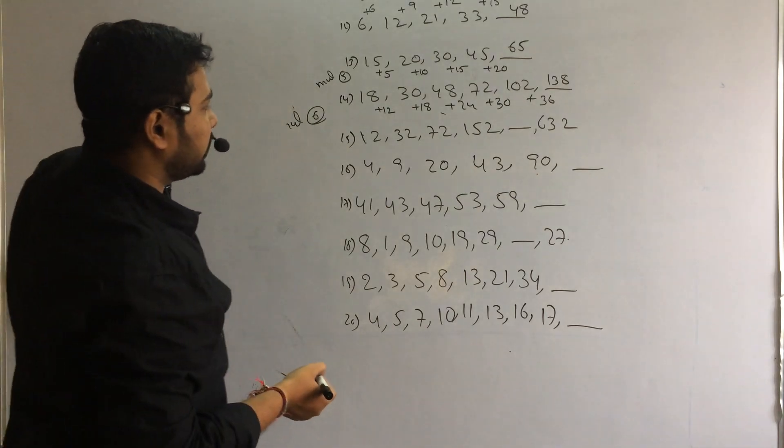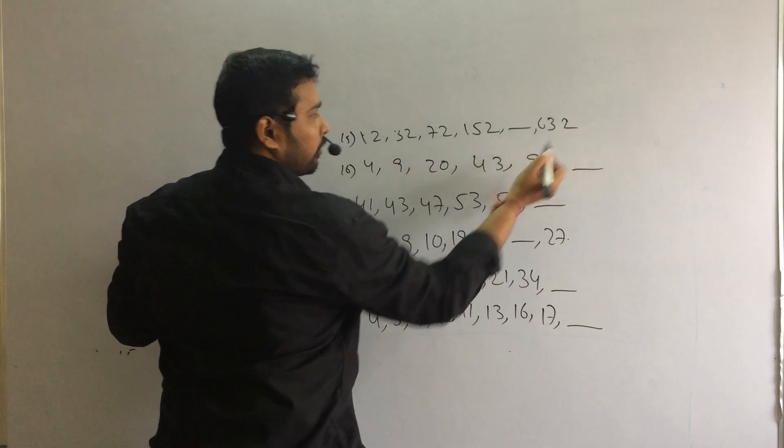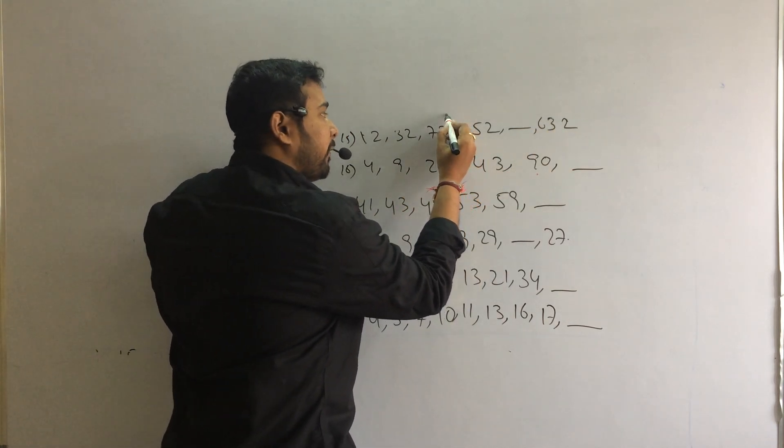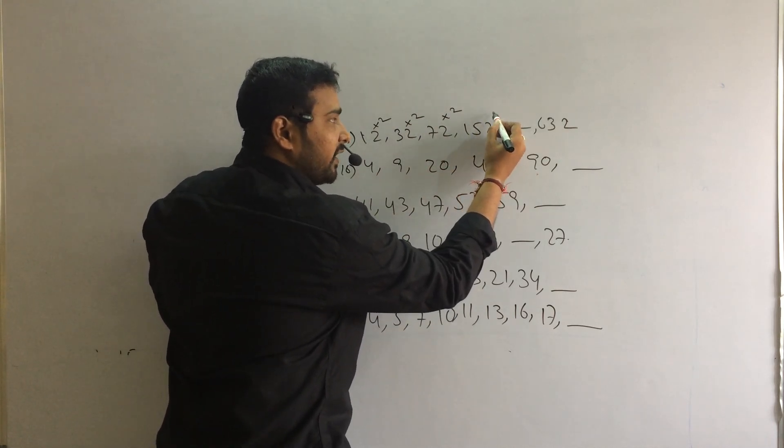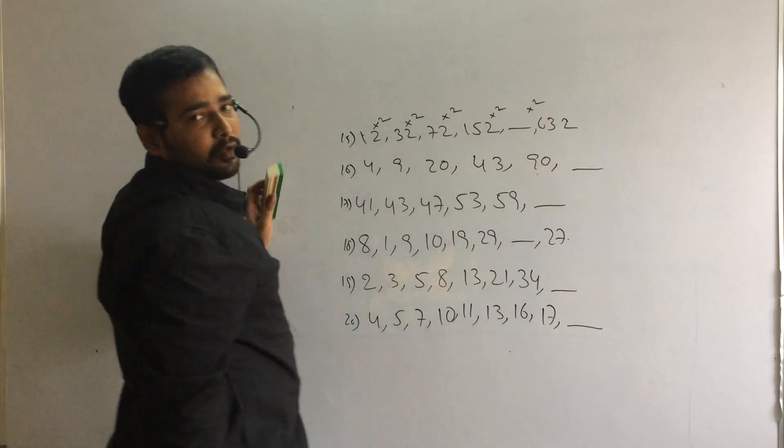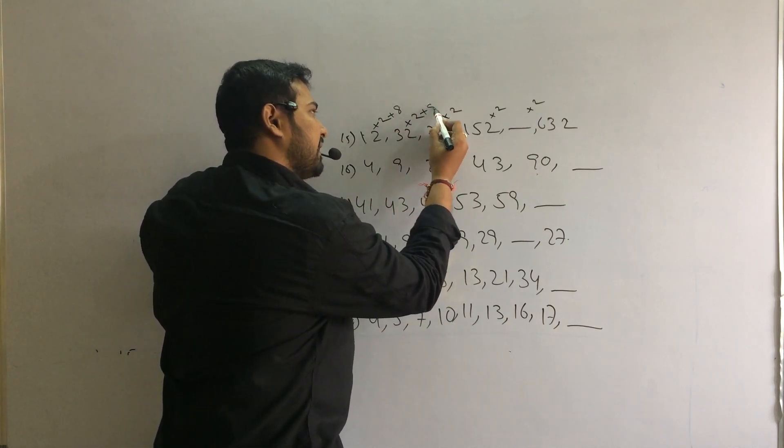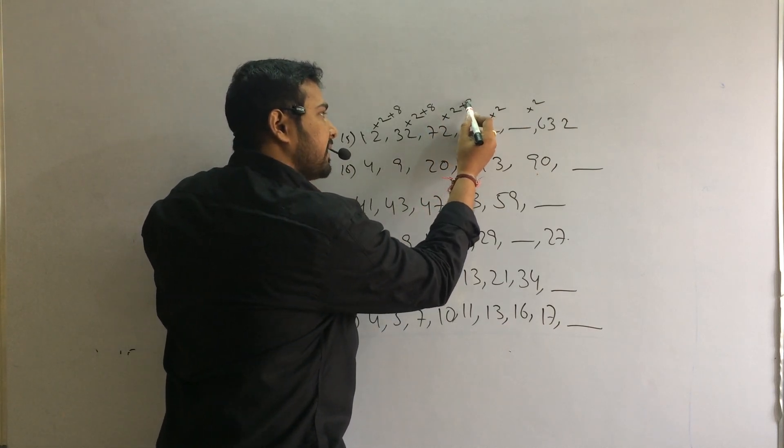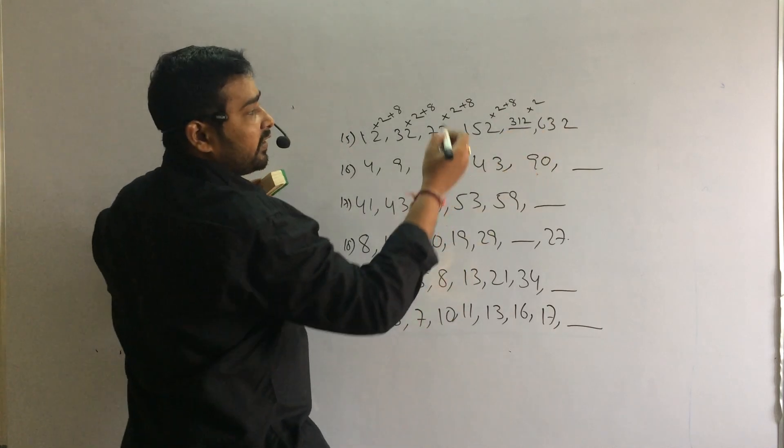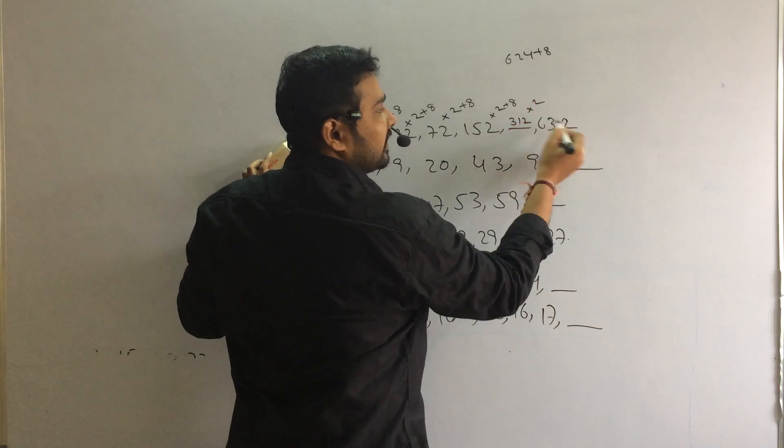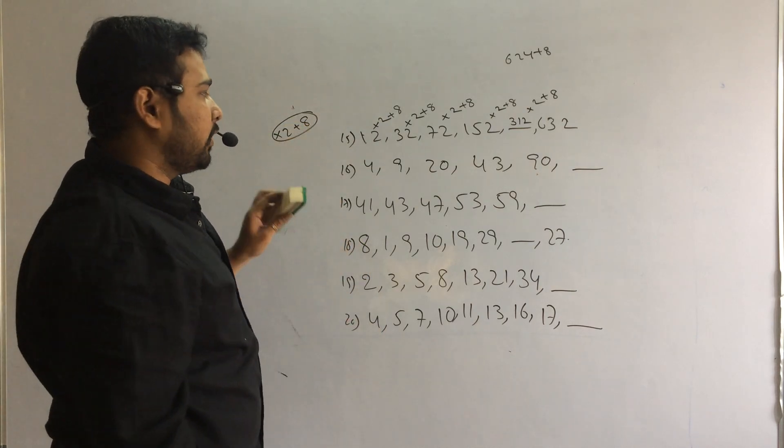Next problem. Here also, difference is abnormal. Difference is abnormal. 70, 150, approximately double. 30, 70 is double. If we double 15, 15 twos are 30, 30 twos are 60. Approximately double. So 12 twos are 24 plus 8, 32. 32 twos are 64 plus 8, 72. 72 twos are 144 plus 8, 152. 152 into 2, 304 plus 8 is 312.